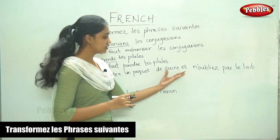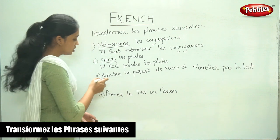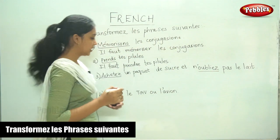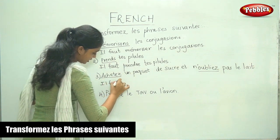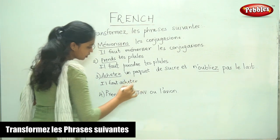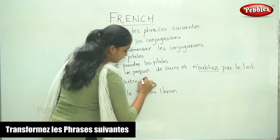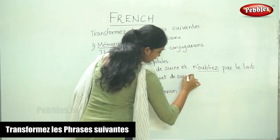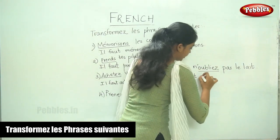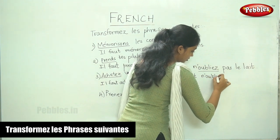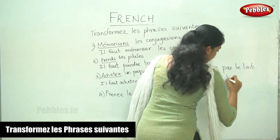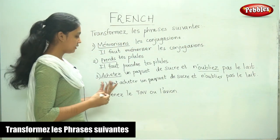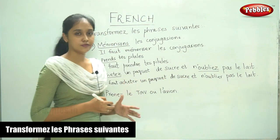Achète un paquet de sucre et n'oubliez pas l'ail. So, in this sentence, you have two verbs: Achète and oubliez. Once you write il faut, it is sufficient. Il faut acheter un paquet de sucre et n'oublier pas l'ail. When there are two verbs, you write il faut plus both the verbs in the infinitive form. So, it is simple.